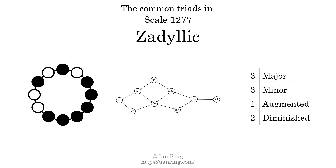Here is a Hamiltonian path of parsimonious voice leading that uses all the triads.